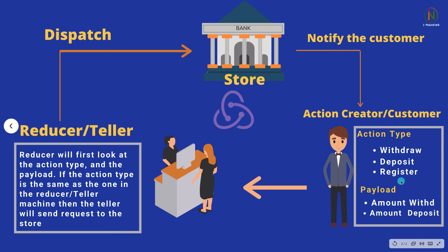The second property you need to know is called the payload. After you determine the kind of action you want to take, for example if you want to withdraw money, you need to specify how much you want to withdraw — that amount is what you call the payload. If your action type is deposit, the payload is how much money you want to deposit.